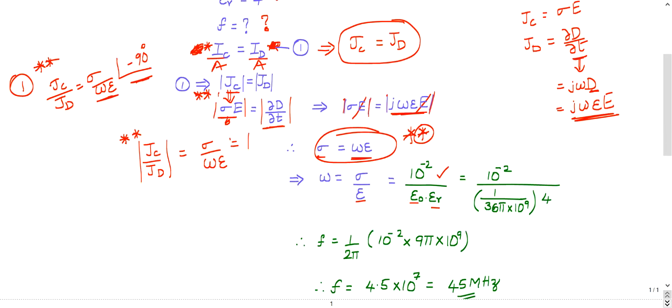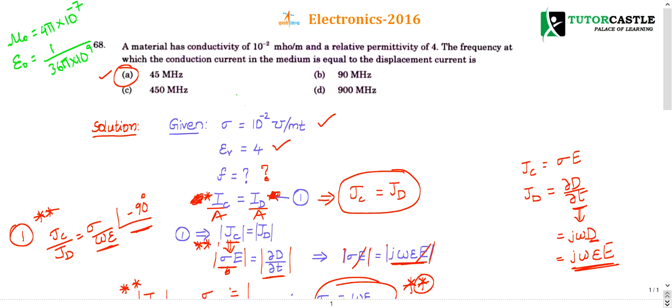Epsilon 0 is nothing but 1 by 36 pi into 10 power 9. These two values try to remember in terms of pi. 4 pi into 10 power minus 7, 1 by 36 pi into 10 power 9. Please try to remember these two values. This is the end of this question. If you have any queries, post them in the comment box and subscribe the channel for getting more updates.